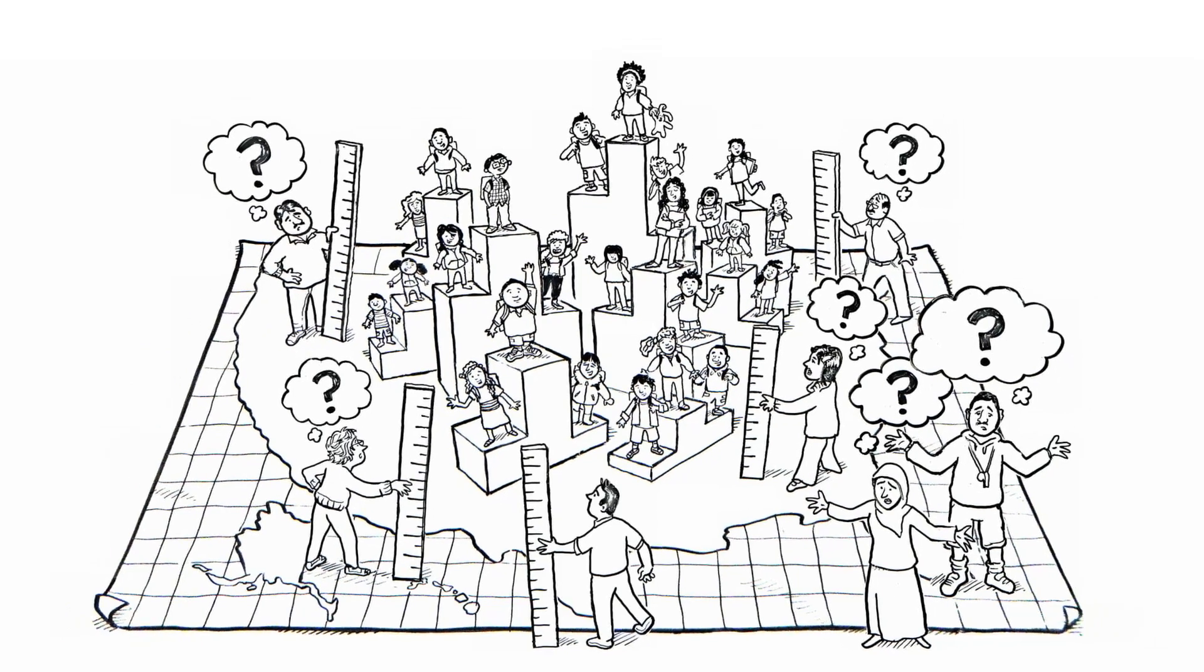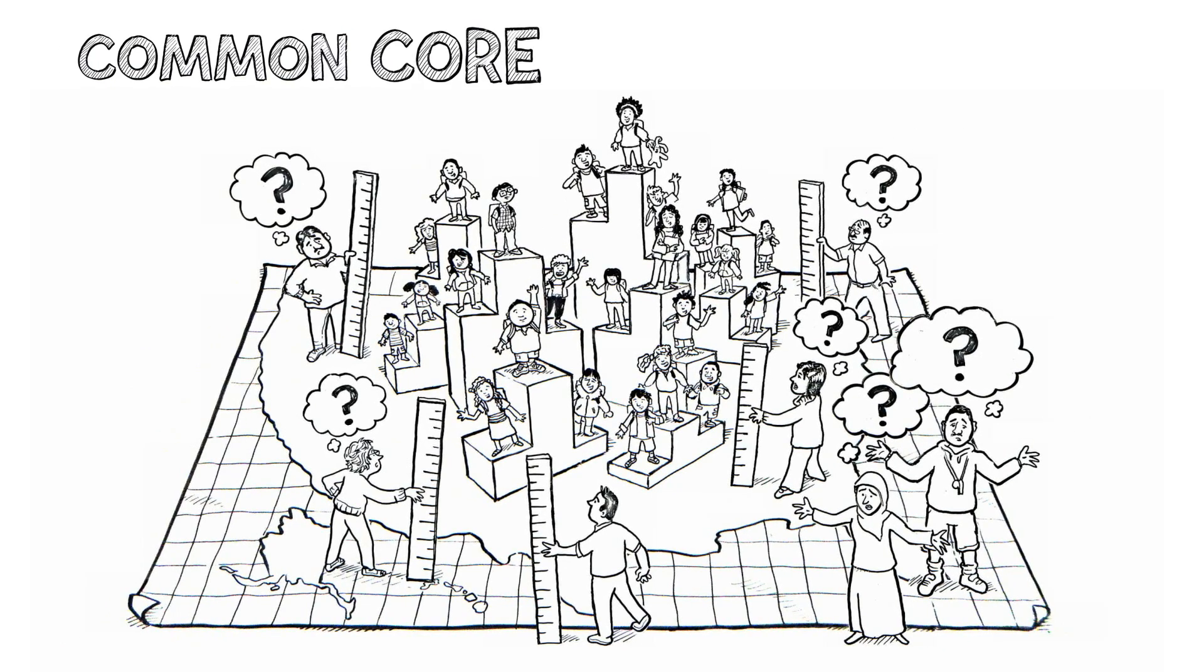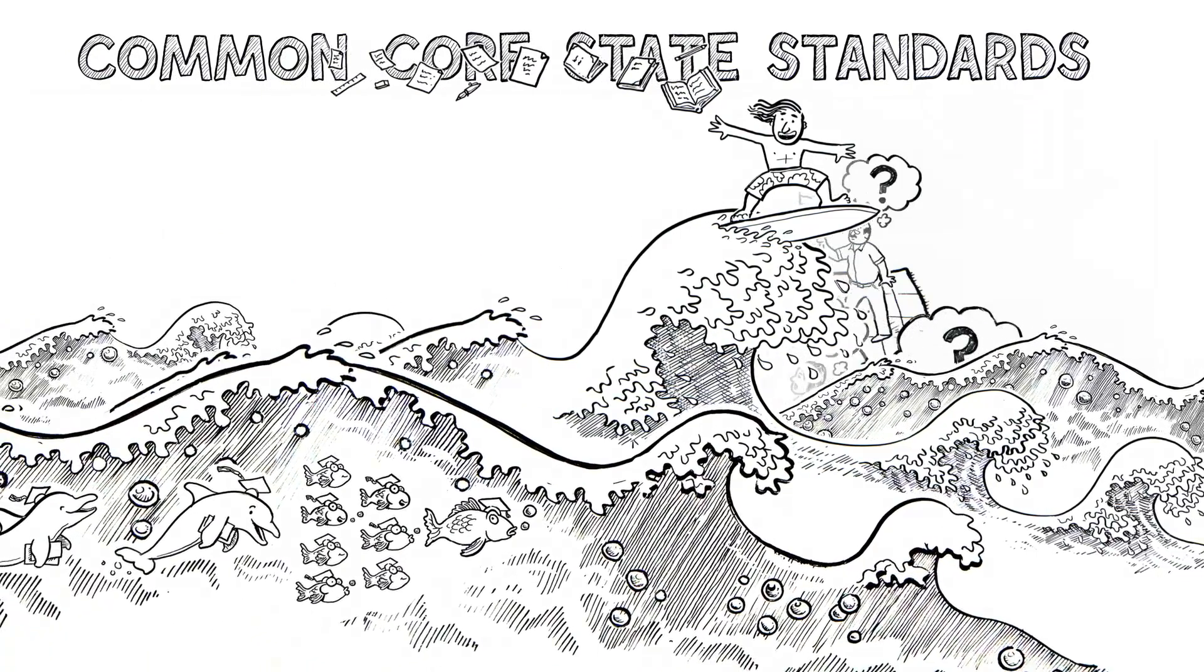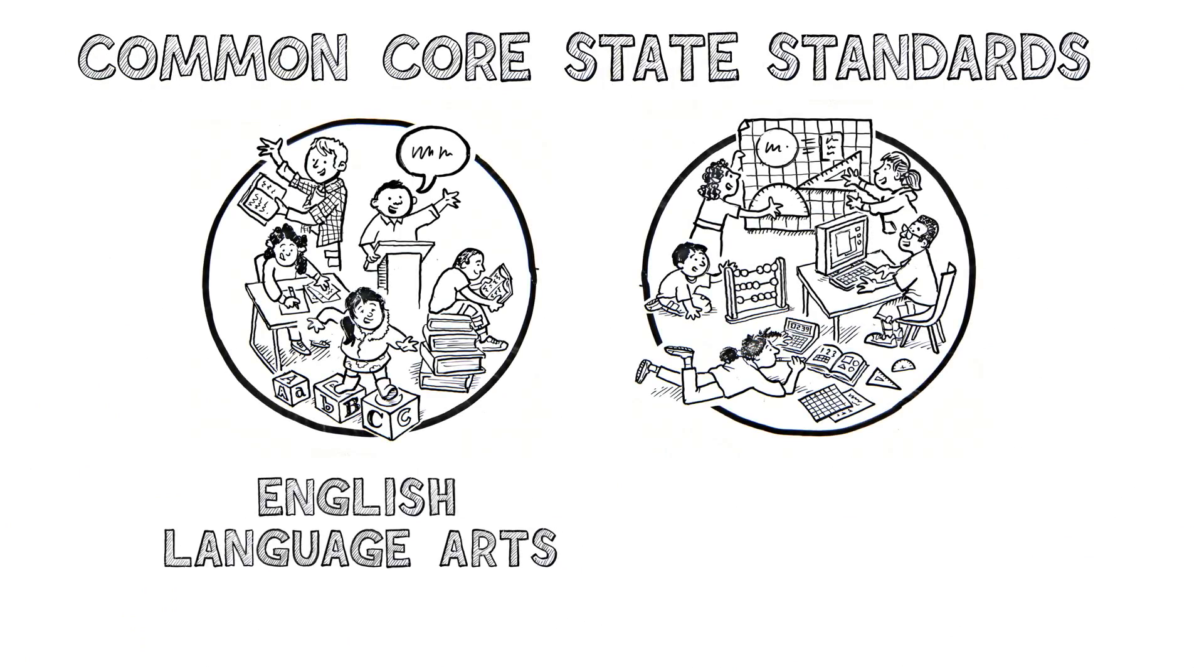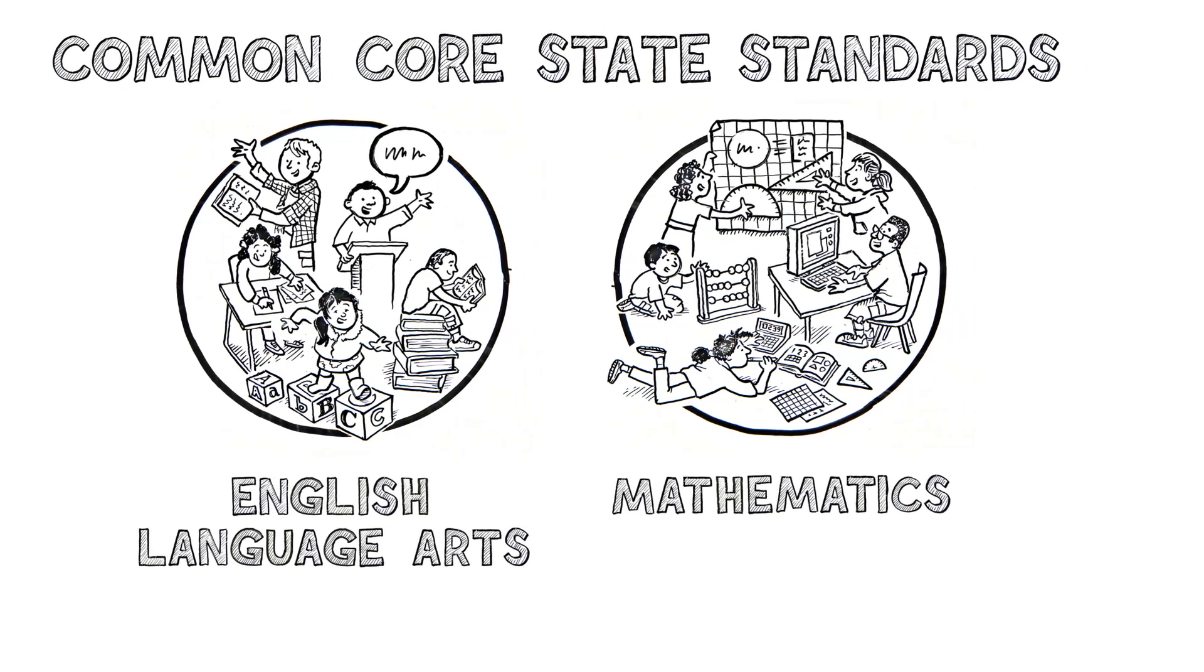What we really need are clear goals. That's where the Common Core State Standards come in. They're like a total sea change in education. Consistent, strong, clear benchmarks for English language arts and math. Here's how it works.